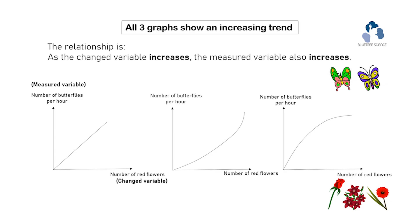These three graphs here all show an increasing trend and they are all line graphs. Therefore, their relationship is: as the change variable increases, the measured variable also increases.